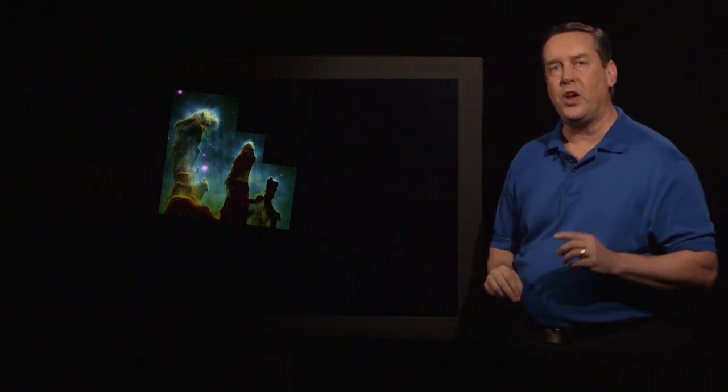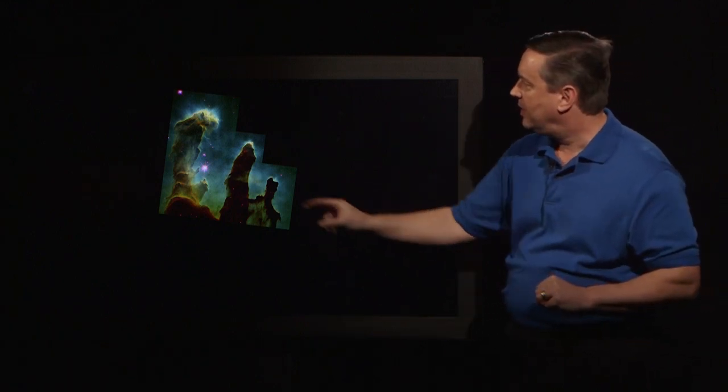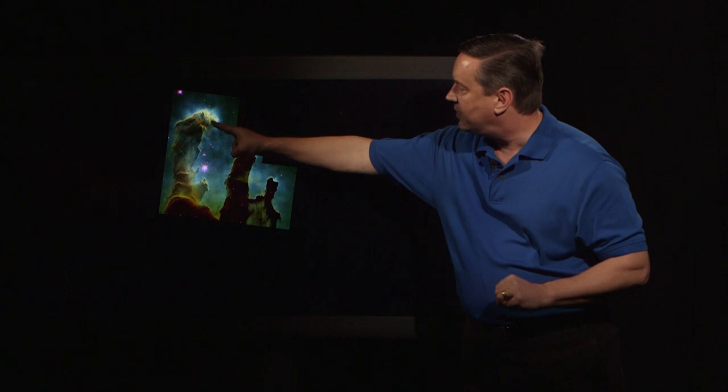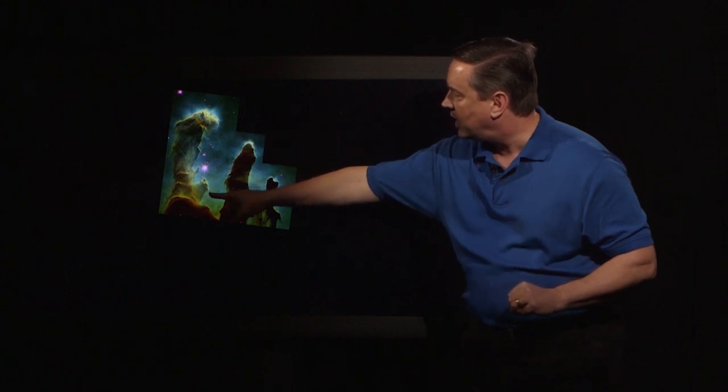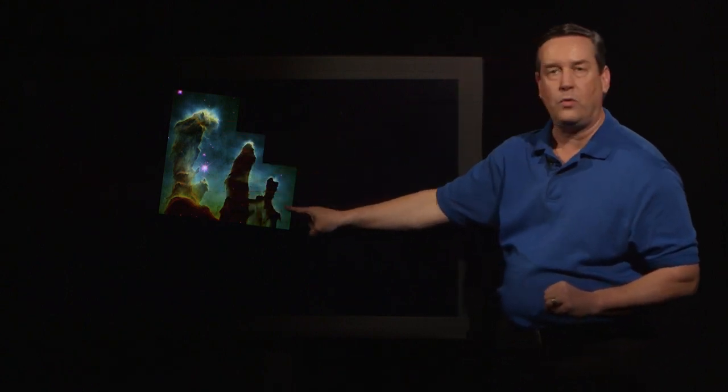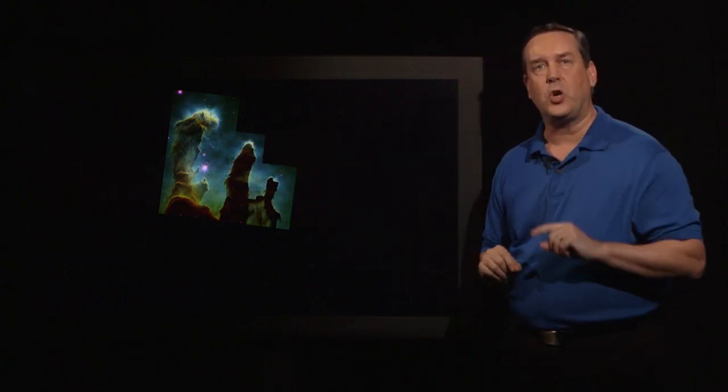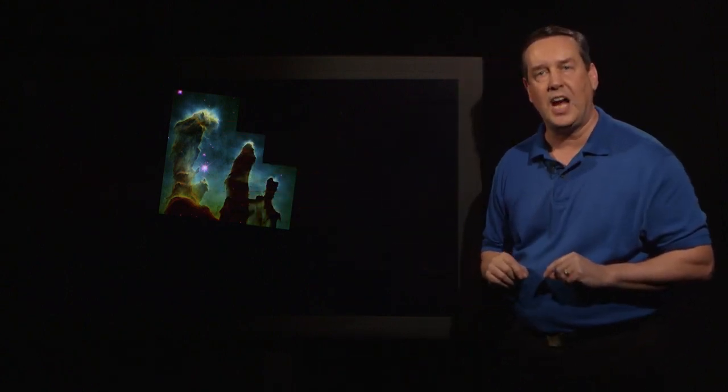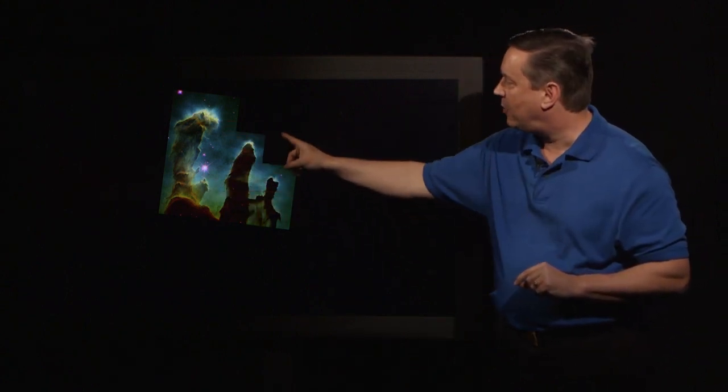In Wide Field Planetary Camera 2, there are three wide-field chips: the upper left, the lower left, and the lower right, and one chip that's called the Planetary Camera in the upper right.